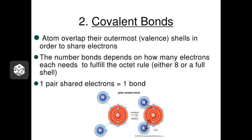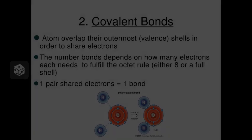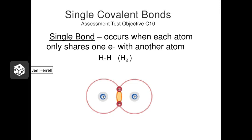We consider the sharing of one electron pair to be one bond. When atoms share a single electron with each other, we call that a single covalent bond, and we represent it in the structural model with a little stick between the two symbols. For example, both hydrogen atoms in H2 each need one more electron to be happy, so each shares its electron with the other, and occasionally two electrons will be flying around either nucleus. This is hydrogen gas, or H2.